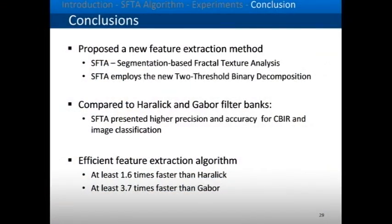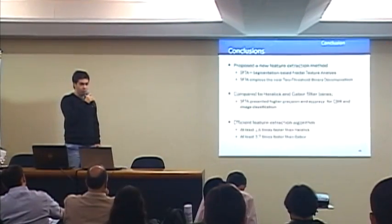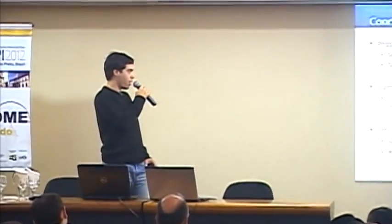In conclusion, we proposed the SFTA, a new texture feature extraction method, and compared it to Haralik and Gabor filter banks. SFTA obtained higher or competitive precision and accuracy both for CBIR and image classification. Most importantly, SFTA is efficient: at least 1.6 times faster than Haralik and at least 3.7 times faster than Gabor. Thank you for your attention.